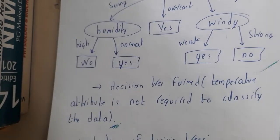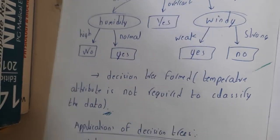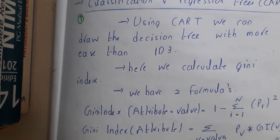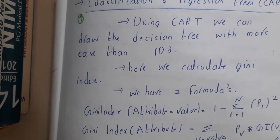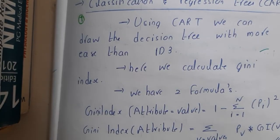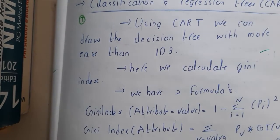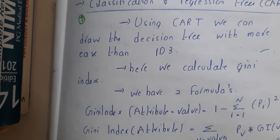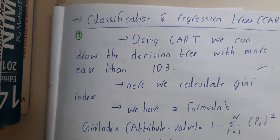I hope everyone got a clear idea about this concept. In the next lecture, we'll go through one more method to solve a decision tree — that is CART, Classification and Regression Tree. If the question doesn't mention which method to use, I suggest using CART, as it is far easier compared to ID3. If it specifically says ID3, use ID3. Let us meet in the next lecture. Thank you, thanks for watching.